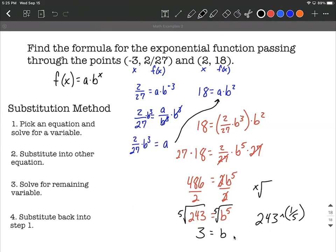Let's use that and substitute back into step one, where the other variable is on one side by itself. As we substitute in, we're going to get two twenty-sevenths multiplied by three to the third power equals a. Now three to the third power is just three times three times three, or twenty-seven.